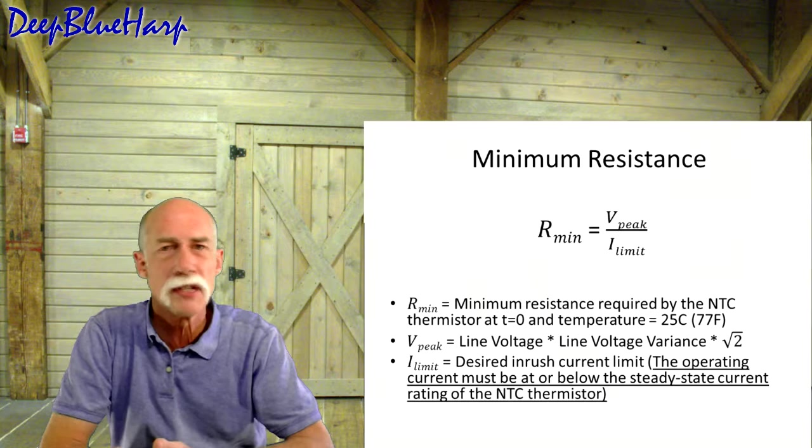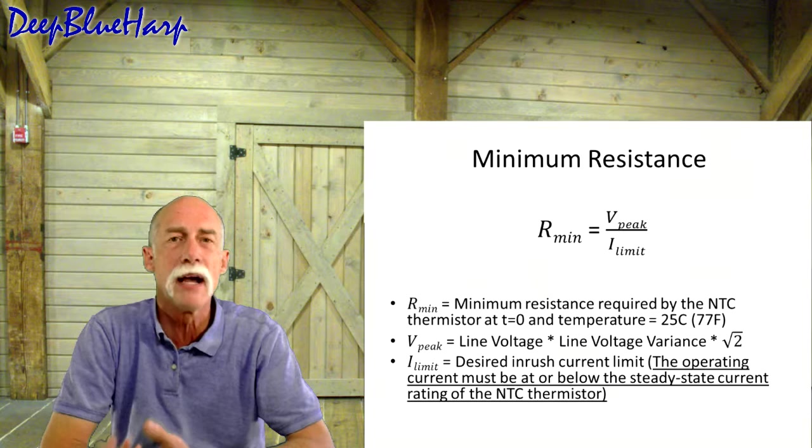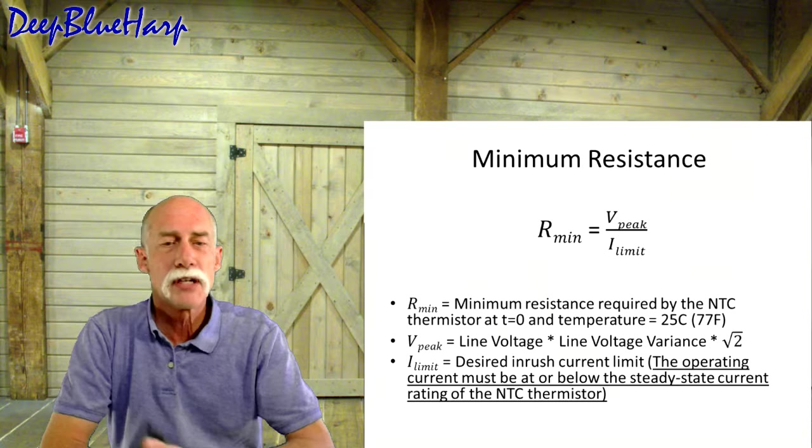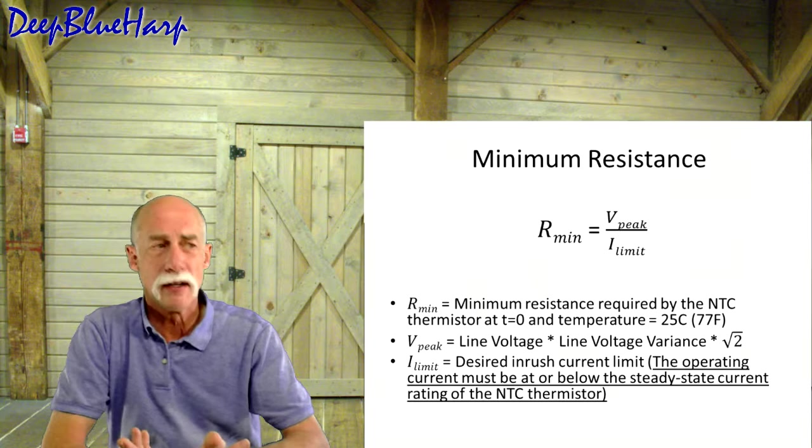As we've noticed in this PV series, you'll hear me reference a few times that fuses didn't even prevent that. But that's what they're intended to do. We need to calculate the minimum resistance for the CL60, for this thermistor. What is that? It's the peak voltage divided by the current limit. And the peak voltage is line voltage times line voltage variance times square root 2. Now then, line voltage variance. It happens.